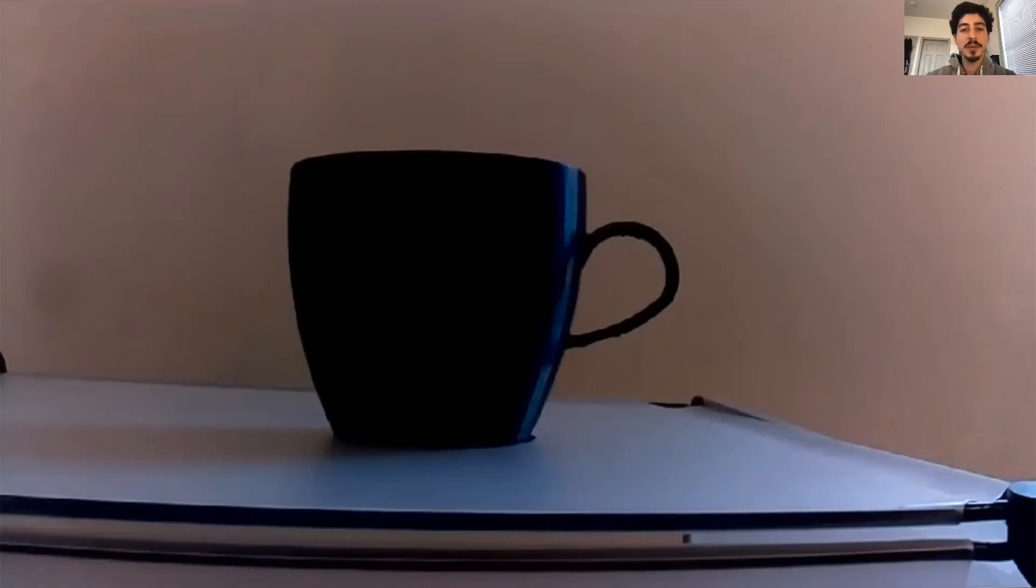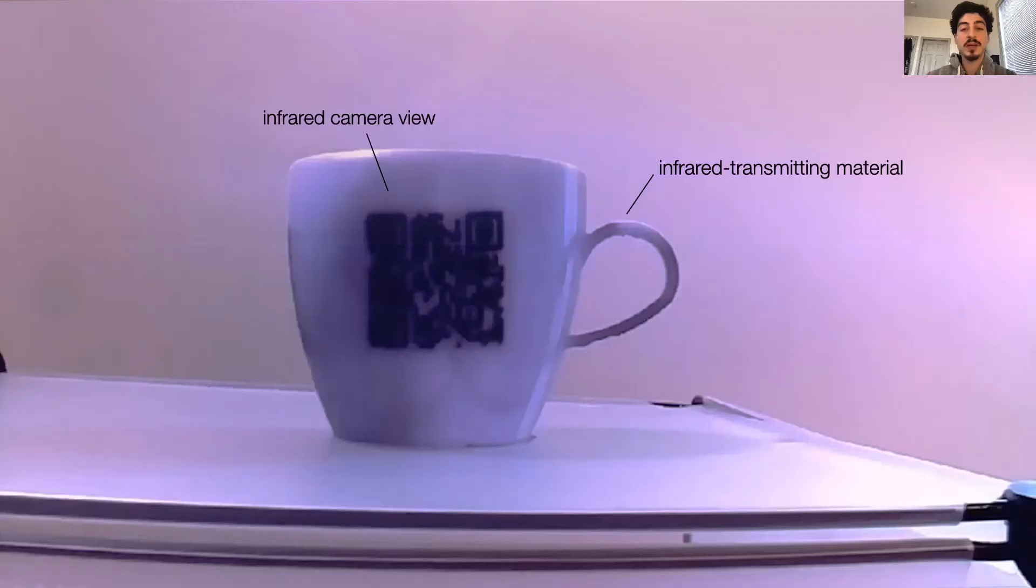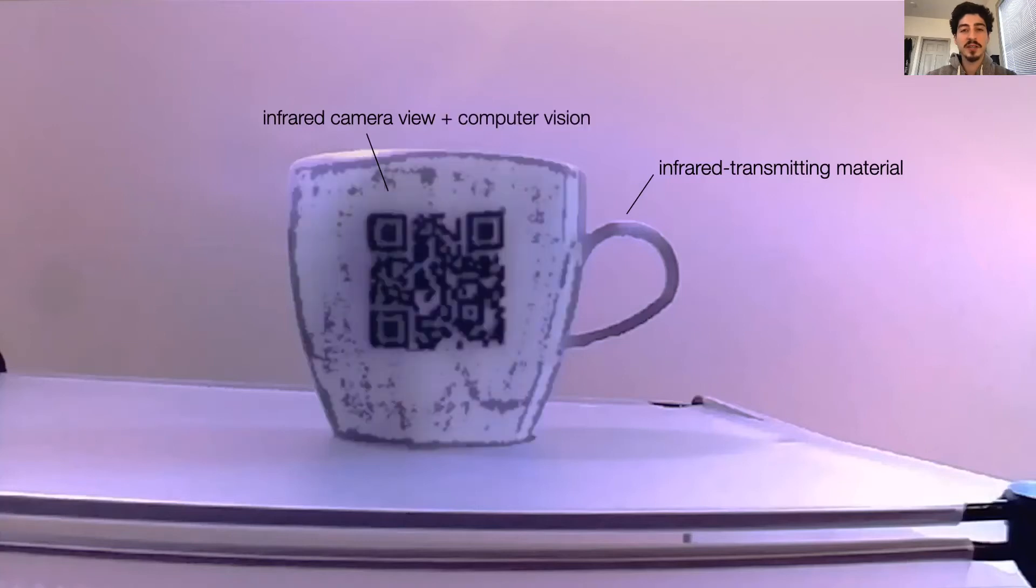Infrared tags are invisible labels embedded into objects that are 3D printed with an infrared transmitting material. Even though you cannot see these tags with the naked eye, they can be captured by using an infrared camera and computer vision techniques.